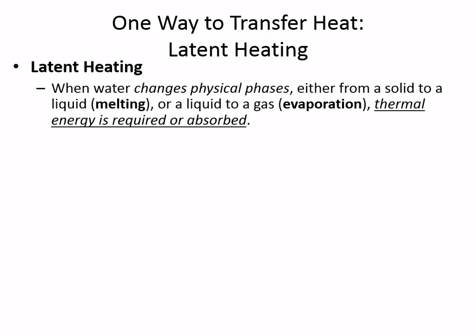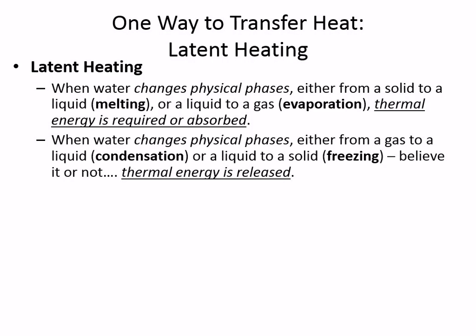Back to left again. Heat is going to be released when gases — in case water vapor goes to a liquid, or when a liquid goes to a solid — heat is also released. That's latent heat. So the first paragraph is going from left to right: heat is required or absorbed. The second paragraph is going from right back to left: heat is released.